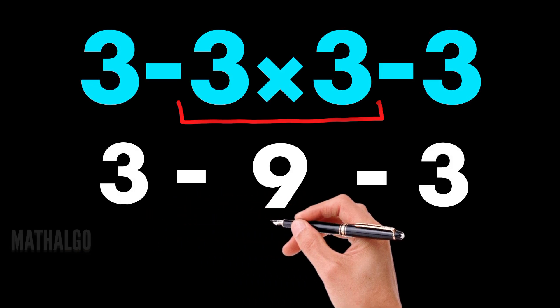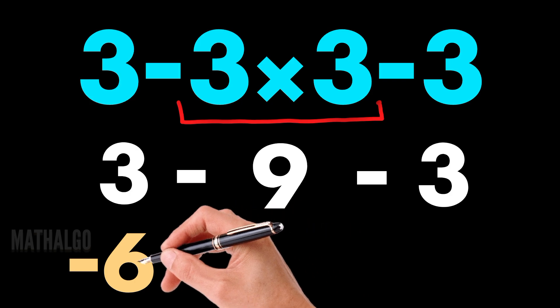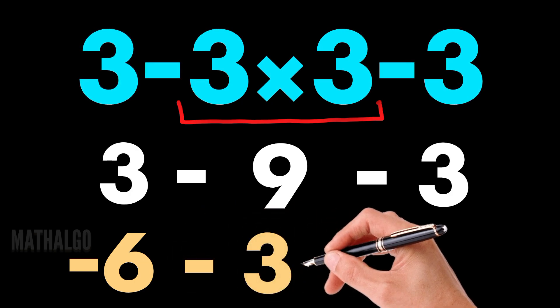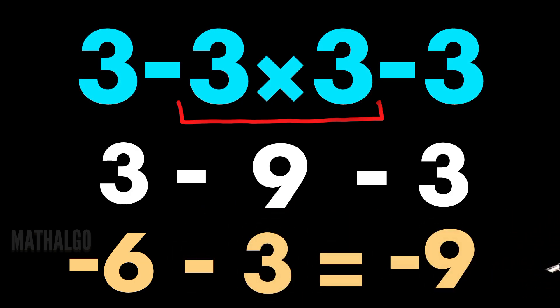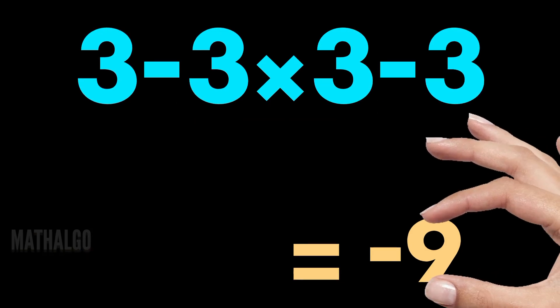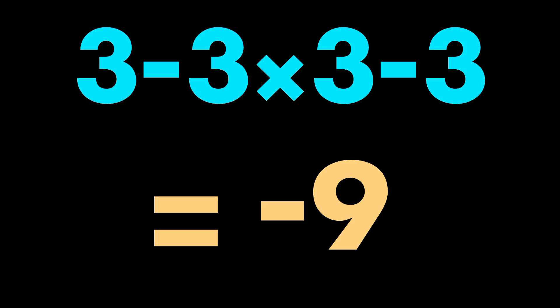Three minus nine equals negative six. Negative six minus three equals negative nine. So the answer isn't zero, it's negative nine.